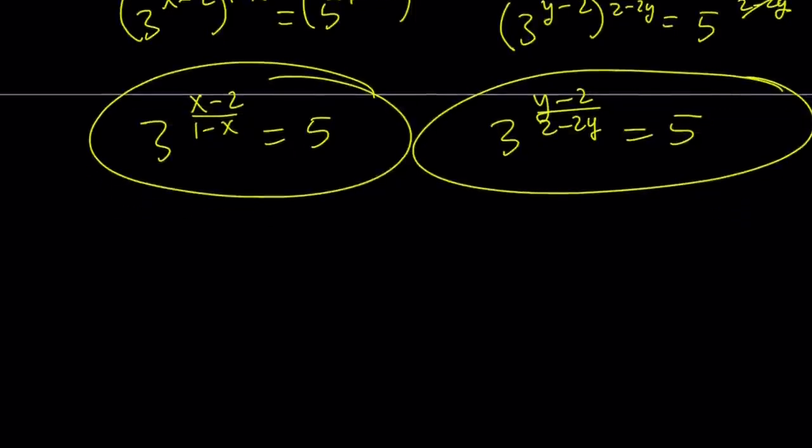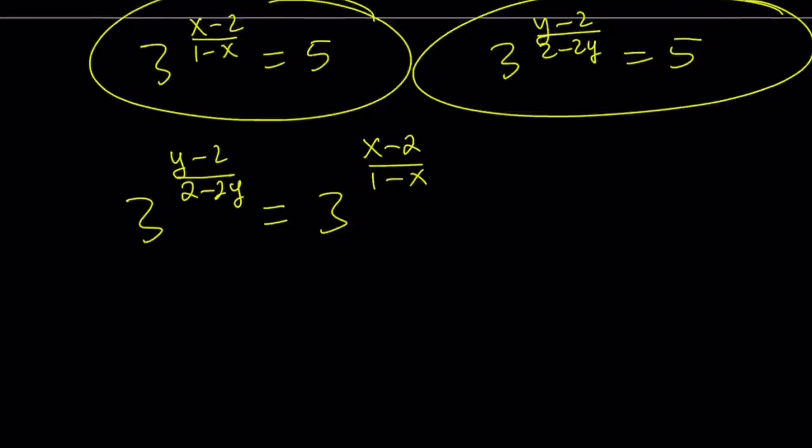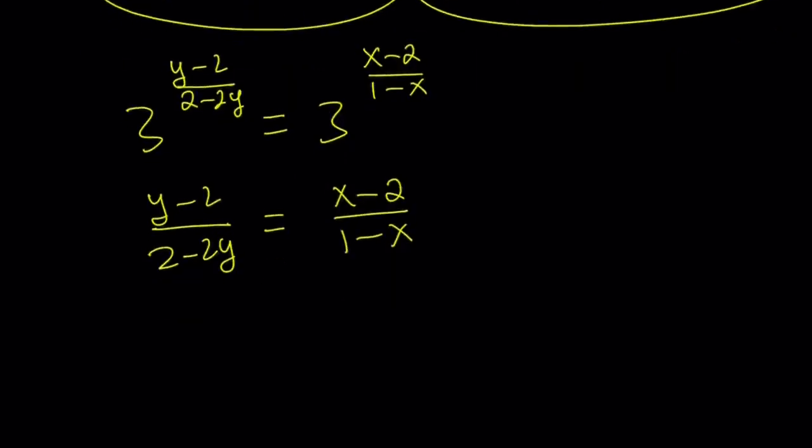So now we can set these equal to each other. And remember, I want to write the y first because I'm solving for y. Now since the exponents are equal, the bases also have to be equal. Or because the numbers are equal, bases are equal, so are the exponents. So from here, we can say that y minus 2 over 2 minus 2y equals x minus 2 divided by 1 minus x. And from here, we're going to be solving for y.